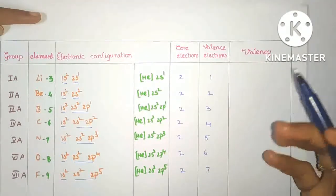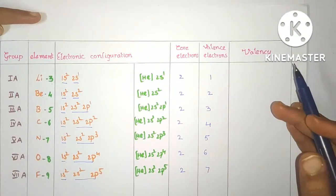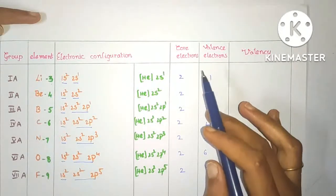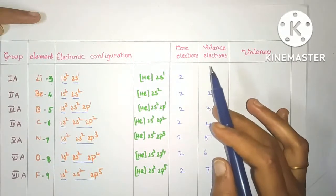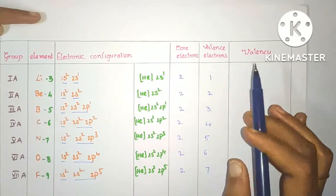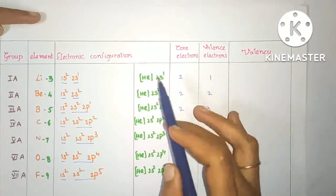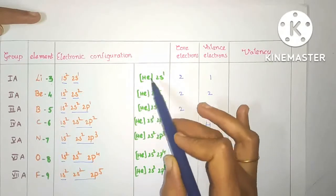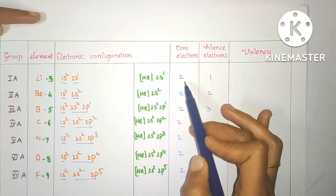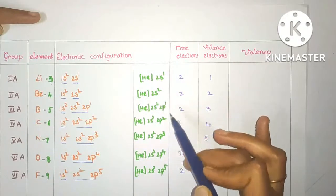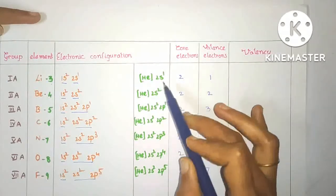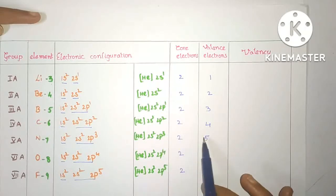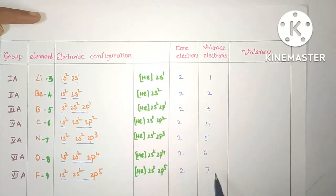We can say that core electrons are nothing but the number of inert gas configuration electrons. Here for helium, that is 2 electrons. So we write 2 electrons as core electrons and the remaining electrons as valence electrons: 1, 2, 3, 4, 5 for nitrogen; 6 for oxygen; 7 for fluorine.